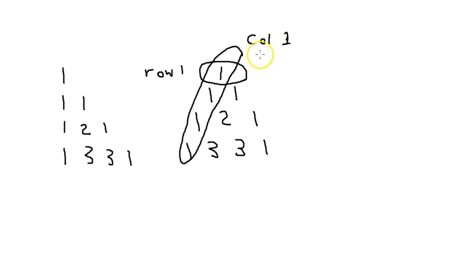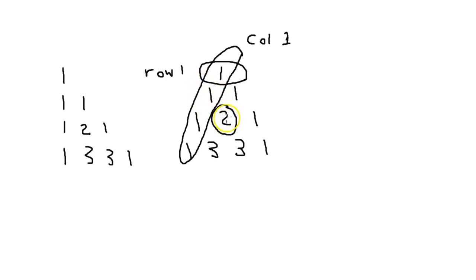Remember that as we do our calculations: each number, for example the two right here, is calculated based on the two ones above it. That number two would be in row three, column two. To get it, you'd use row two column one and row two column two. Now let's jump into some code.